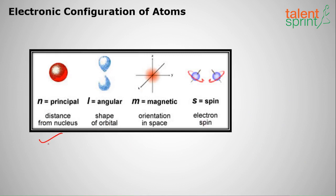In summary: the principal quantum number n gives the distance from the nucleus. The shape of the orbital is given by the angular momentum quantum number l. The orientation in space is given by the magnetic quantum number ml — that is, the angle the orbital makes from different directions. And s, the spin quantum number, gives the electron spin — whether it is clockwise or anticlockwise.